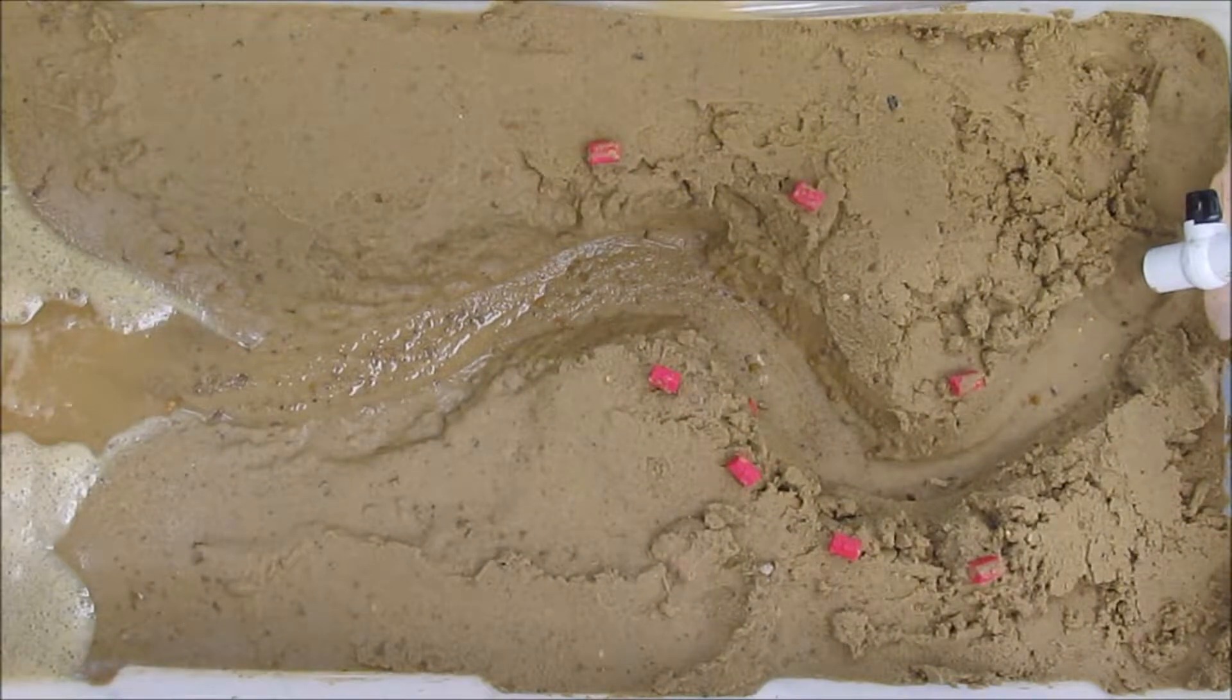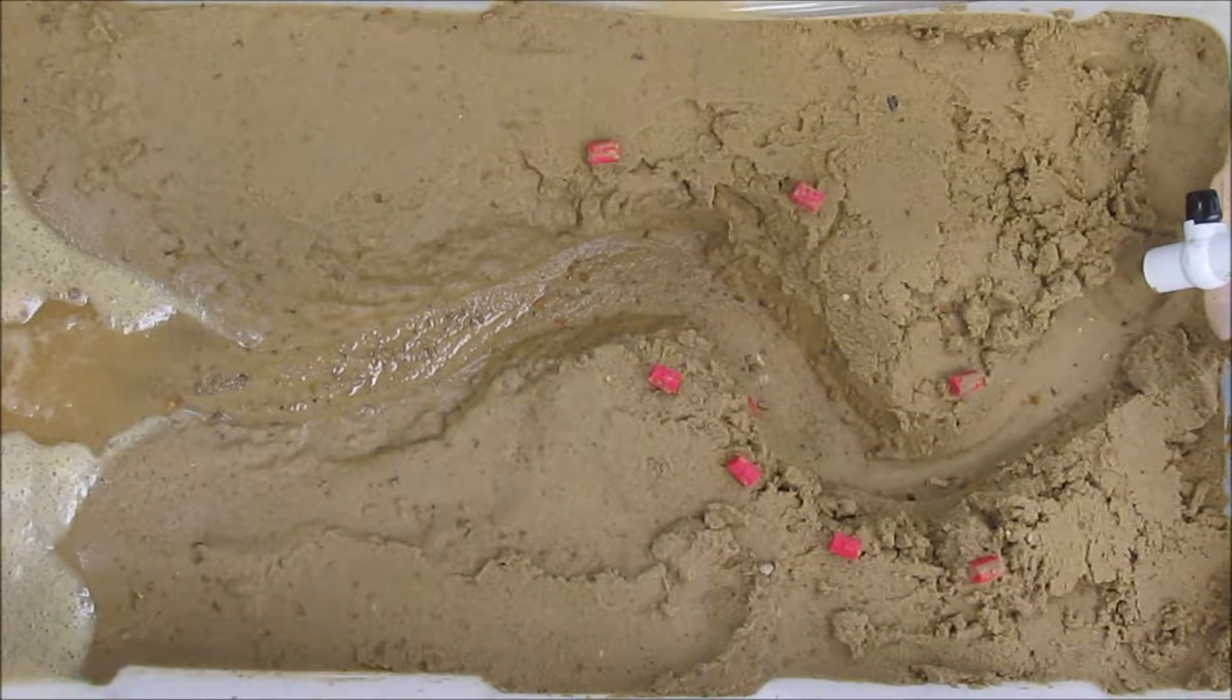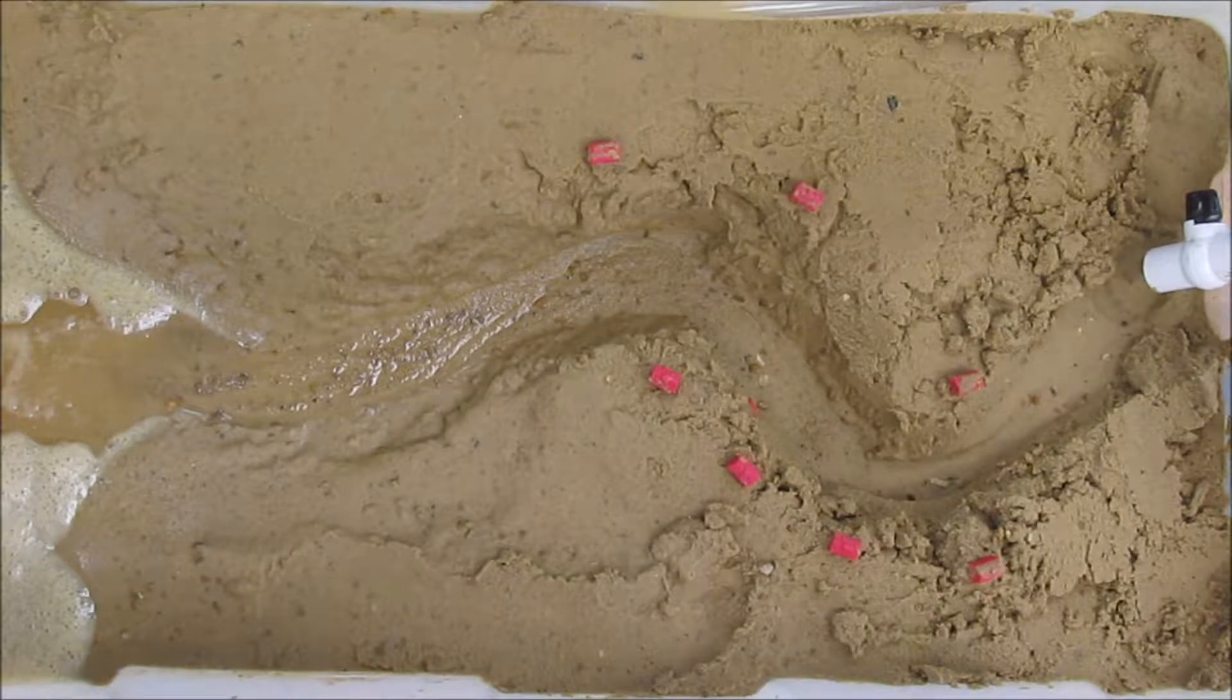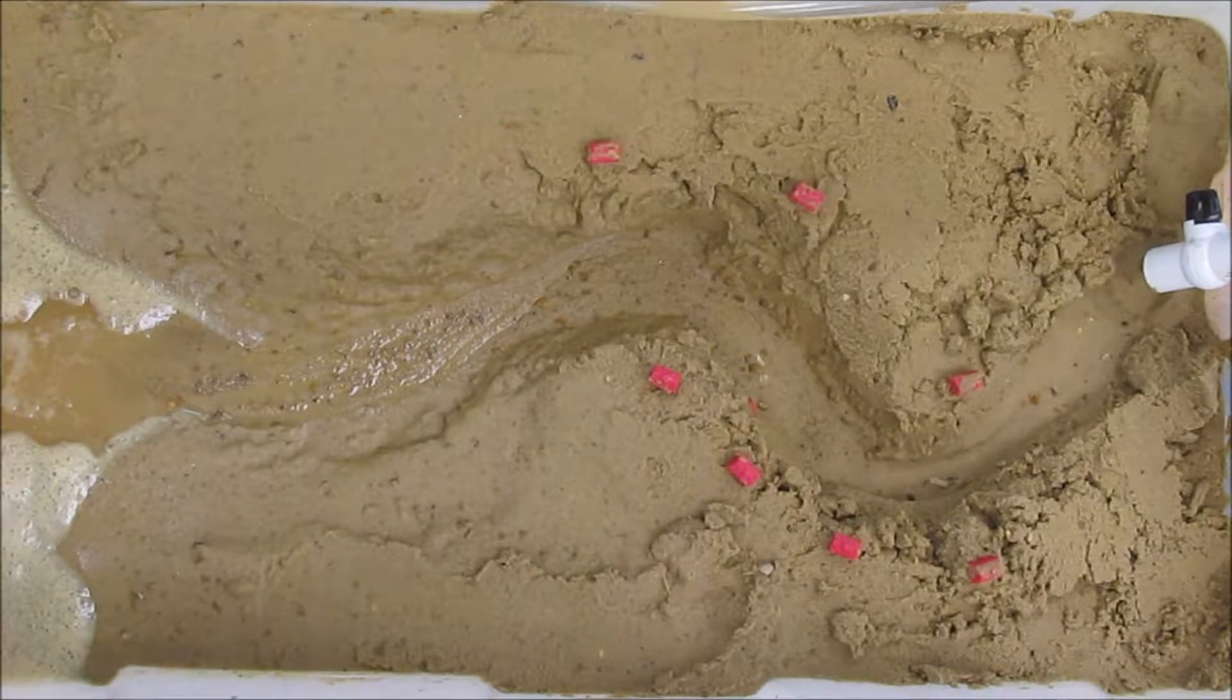In the meandering stream lab, we're going to look at a model of a stream very similar to the ones that we find here in Kentucky. Most rivers that wind through Kentucky are meandering streams with distinct bends and curves in the river.